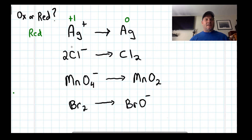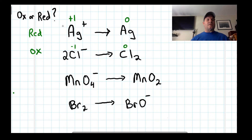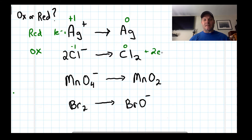In our second example, chlorine is starting with an oxidation state of negative one and going to zero — it is actually increasing in oxidation state. Oxidation is the loss of electrons, so that's an oxidation. In this case the electrons would have to be lost on this side. We put two in there because there were two chlorines.